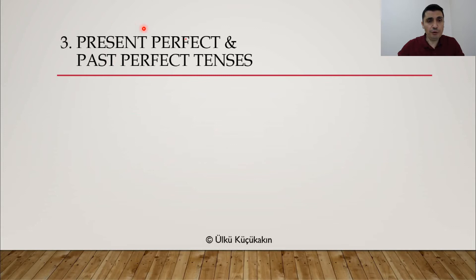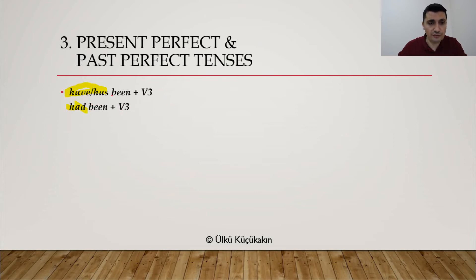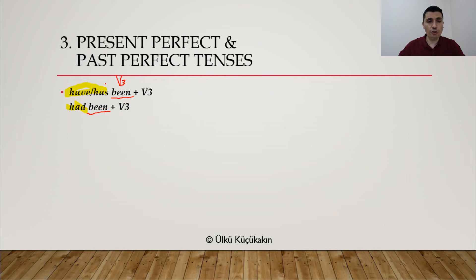Now, present perfect and past perfect tenses — these are perfect tenses. So because these are perfect tenses, we definitely need HAVE/HAS and HAD. We need verb 3. Verb 3 is used in the form of BEEN. Why do we have BEEN here? It's simply because these are perfect tenses, so you are using BE in verb 3 form.